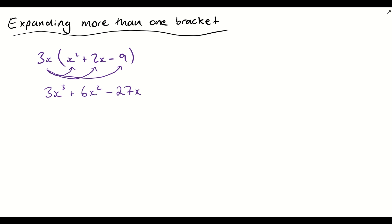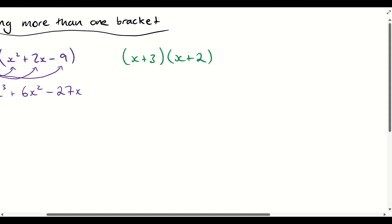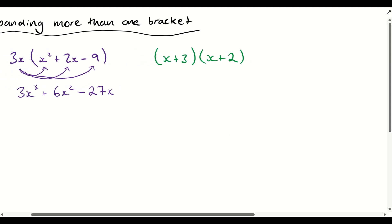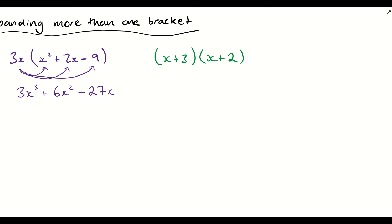We're now going to take a look at expanding out situations where we've got more than one bracket. So how can we expand out, for example, (x + 3)(x + 2)? The same principle applies — we've got to get everything from one side expanding into the other side. We're going to use something called the crab claws.